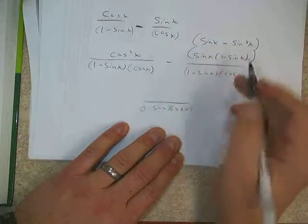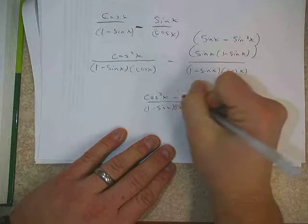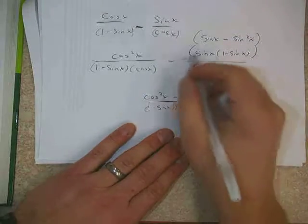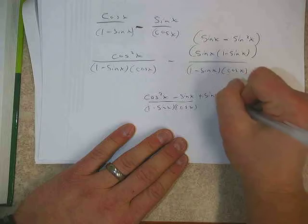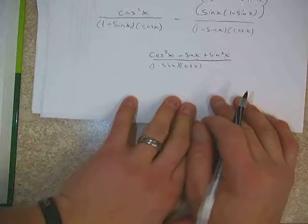So again, if we subtract that entire quantity, our sentence is going to read on top, cosine squared x minus sine x, and then plus sine squared x. So that would be the top of the equation.